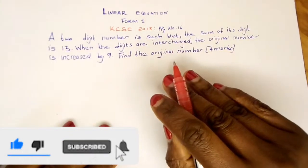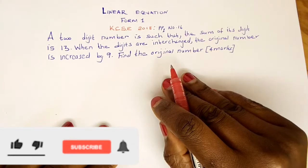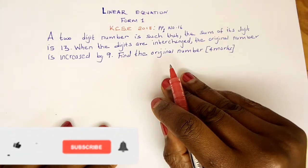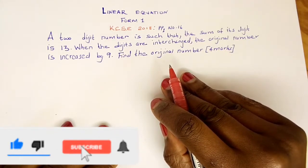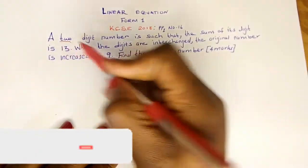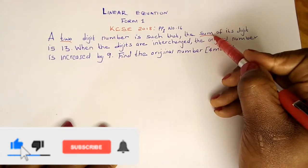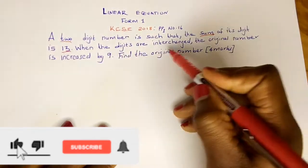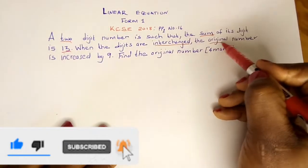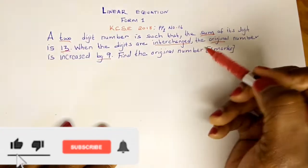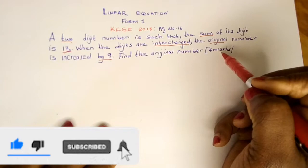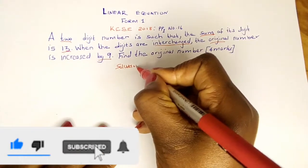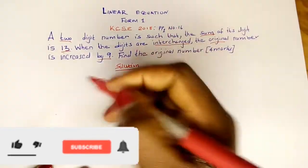When the digits are interchanged, the original number is increased by nine. Find the original number. In this question we are going to understand the place value of these digits, but first of all we have to assume the digits because we are told the number is a two-digit number, and when the digits are added together the answer is 13.